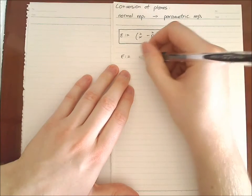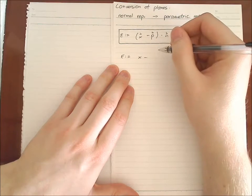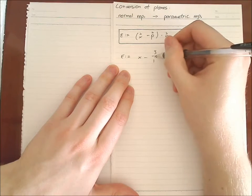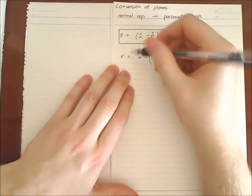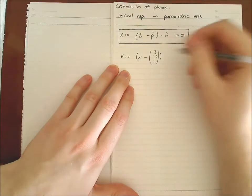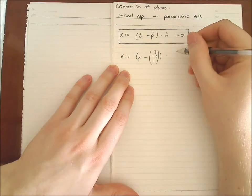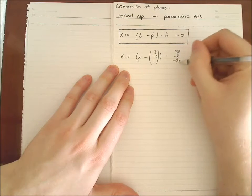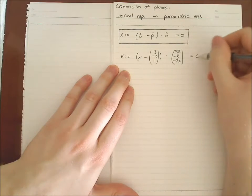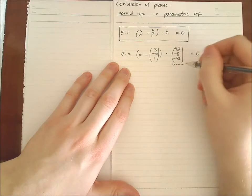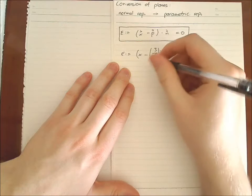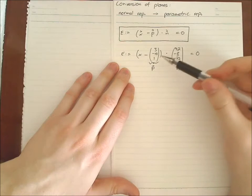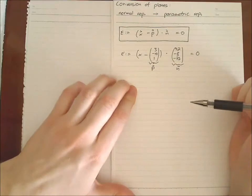For our example, the plane is given as: x minus the support vector (3, -10, 1), times the normal vector (42, -8, -77) equals zero. This support vector is some sort of point, and I'll call it p, while this is the normal vector n.